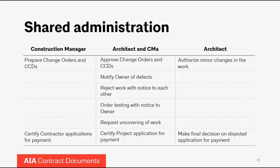Payment applications under the AIA documents work as follows: pay applications first go to the construction manager. The construction manager — particularly on a multi-prime job — reviews all the pay applications from each of the multiple prime contractors for accuracy and completeness. Then the CM prepares a project application for payment that rolls up all the information from the various individual trade contractor applications, and that project application then goes on to the architect to review and sign off on.